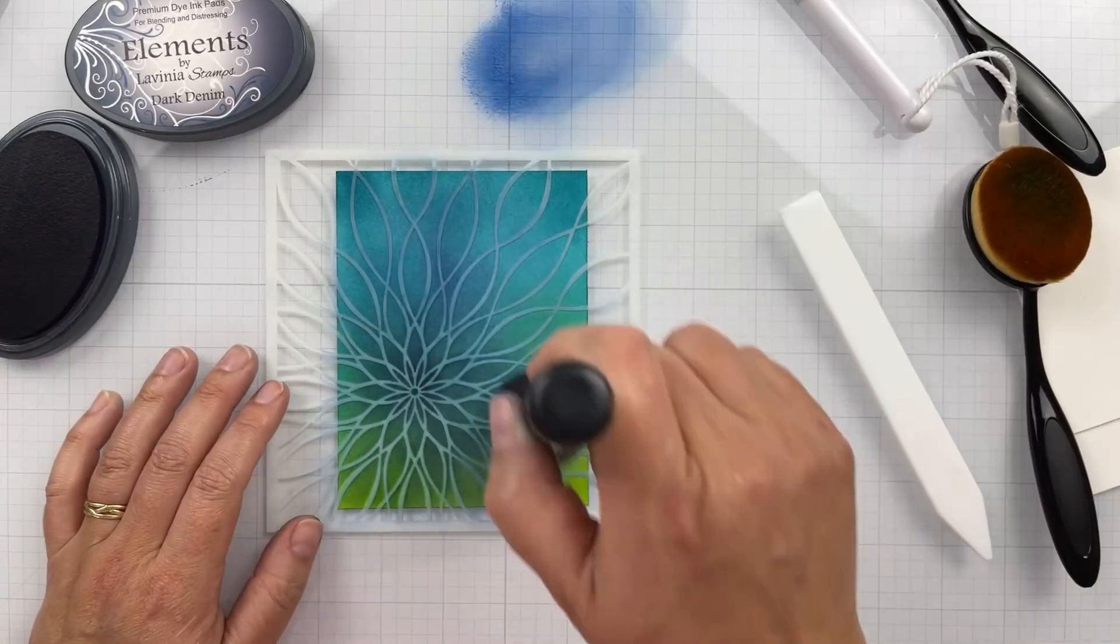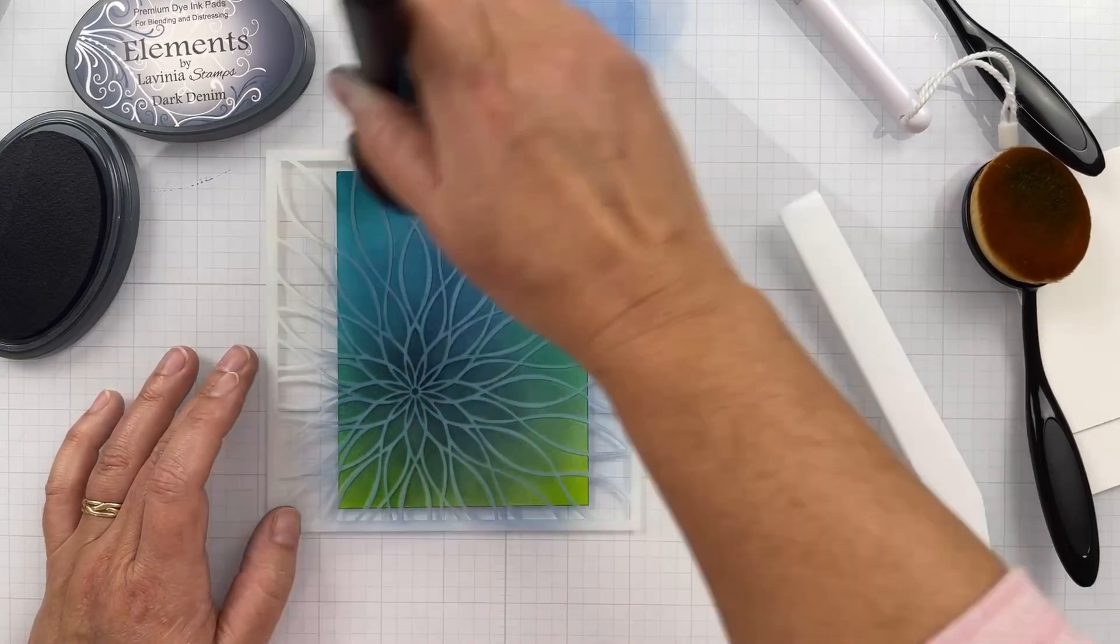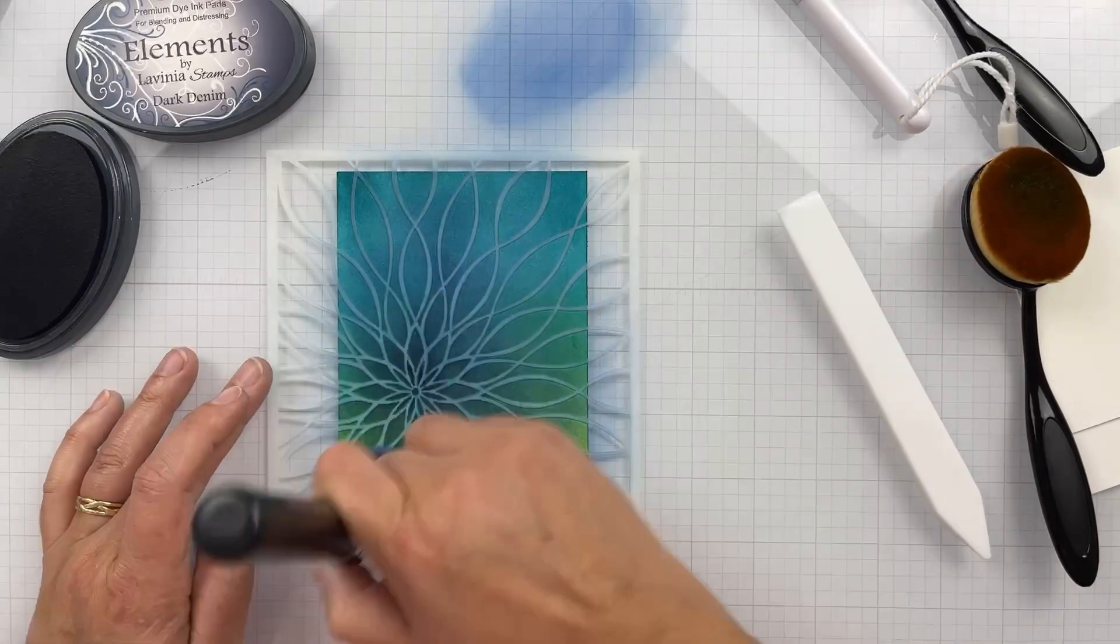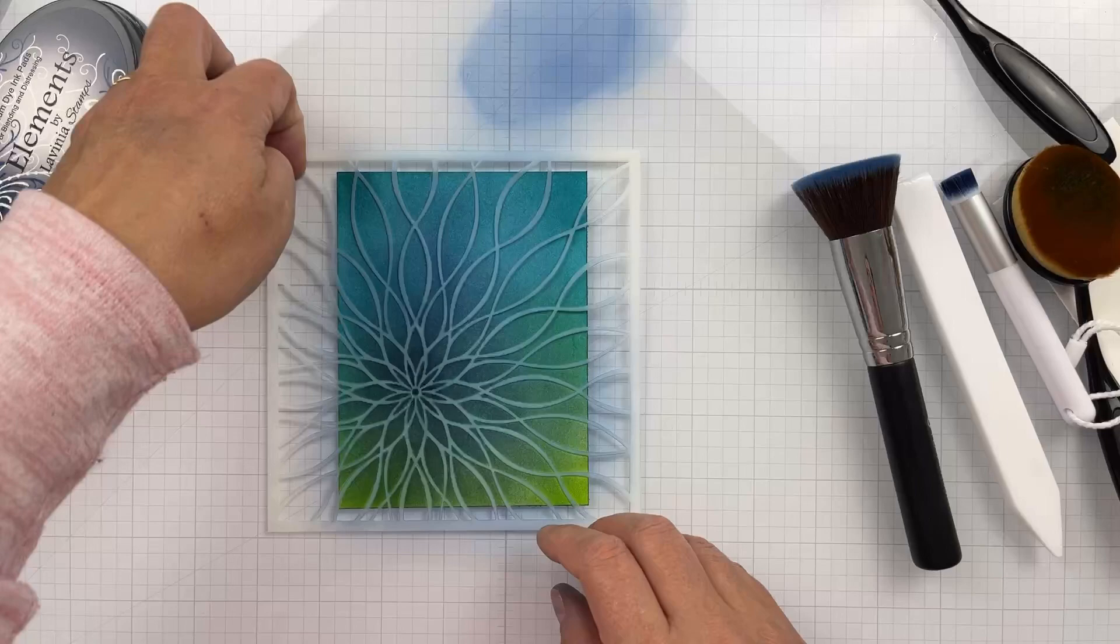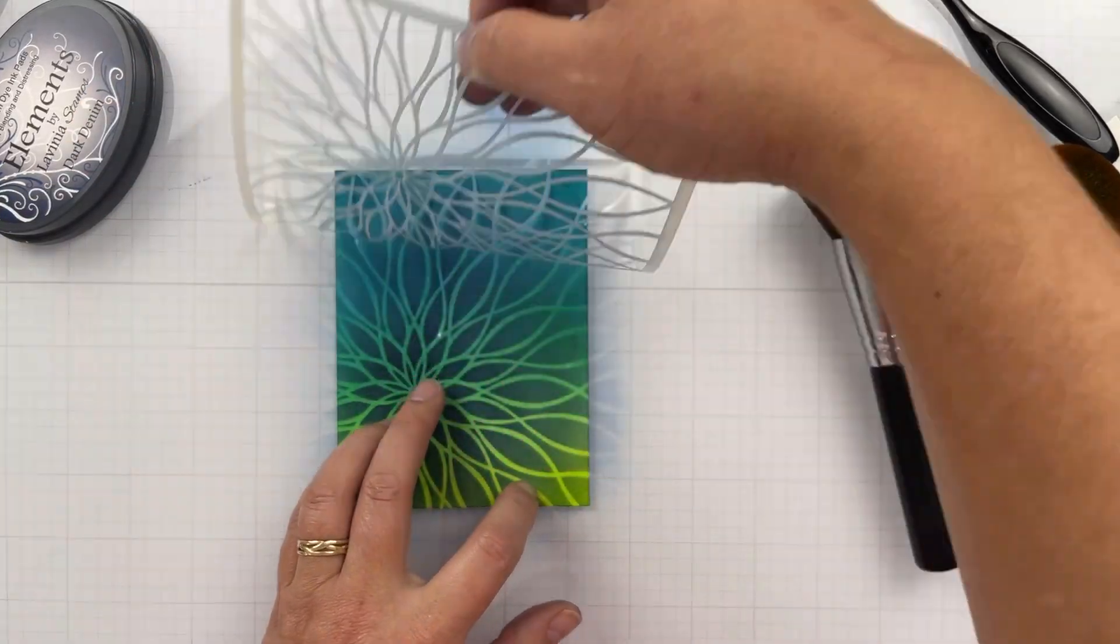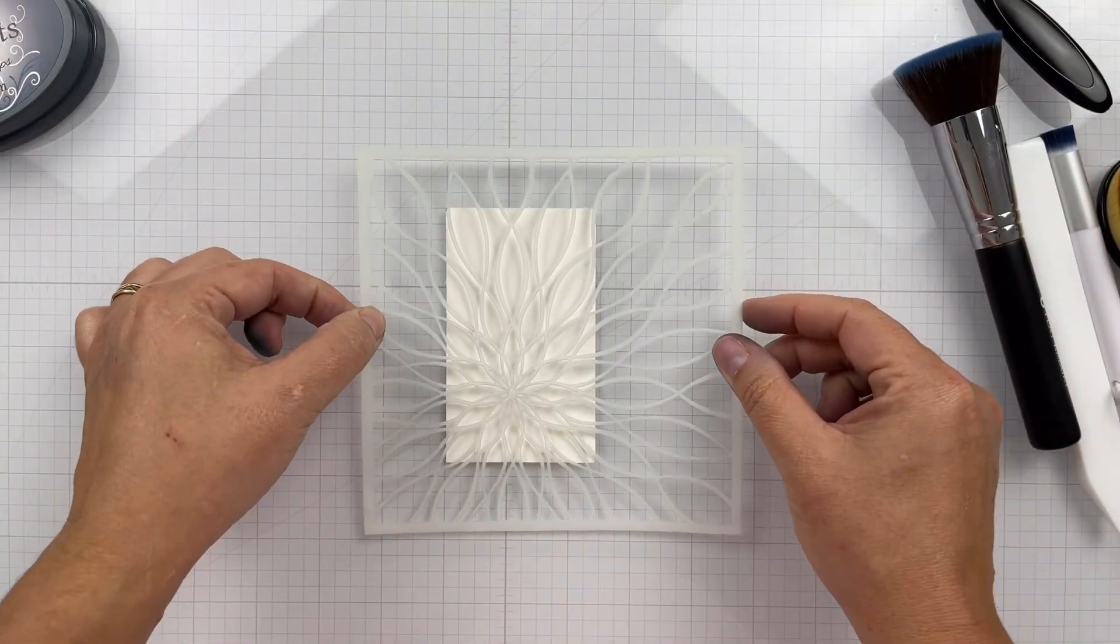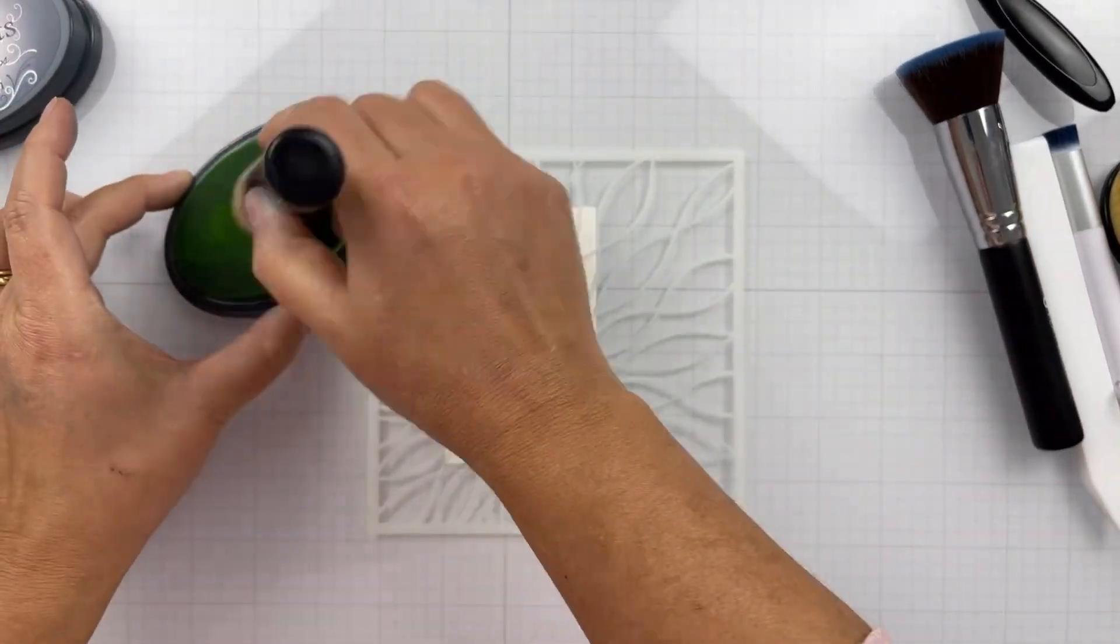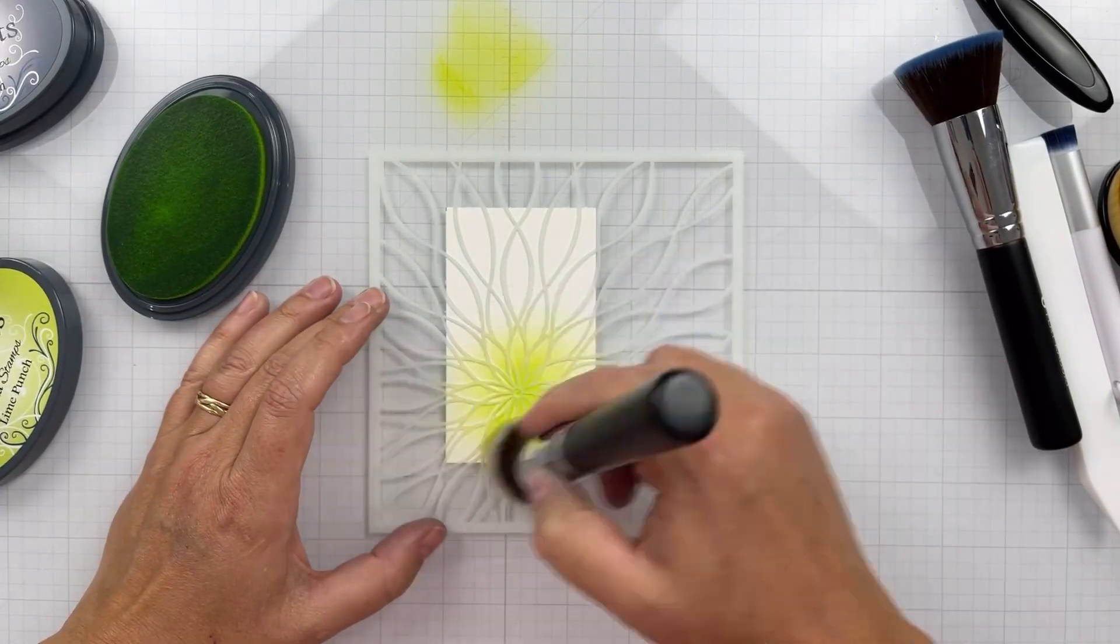I'm using hot press watercolor paper. This is Strathmore 500 series. Any 100% cotton hot press watercolor paper is going to work. I like the Strathmore because it's affordable. I've got repositionable adhesive on the back of my stencil, so I'm being careful. You can see I kind of tore the paper a little bit, so just be mindful if you use repositionable adhesive on your watercolor paper that that can happen.